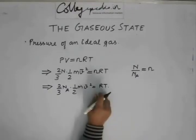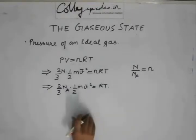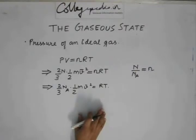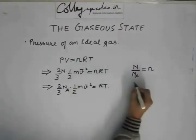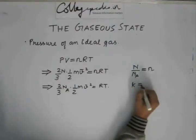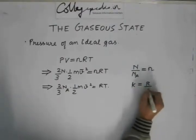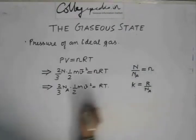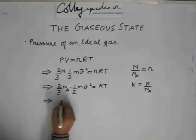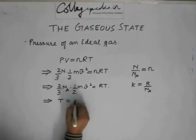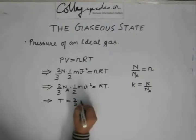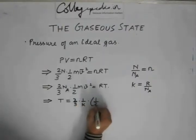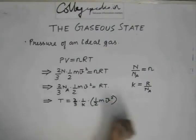From this, we can get the expression for T. We have something of this form here and we know that the Boltzmann constant K is equal to R by the Avogadro's number. So the temperature is going to be equal to 2 by 3 into 1 by K into half mV square.